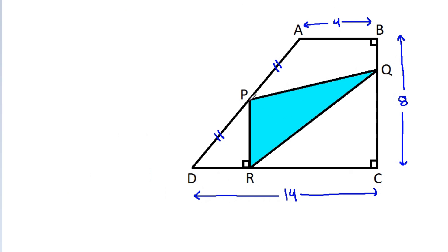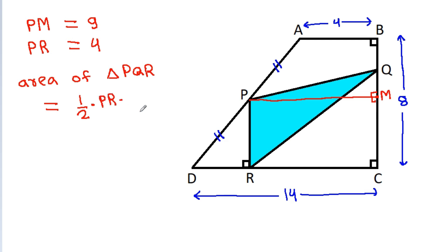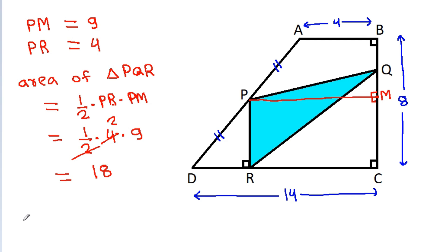Now, if we draw a perpendicular from P on BC, this point is M. We have PM equal to 9 and PR equal to 4. So, area of triangle PQR equals one-half times base PR times height PM, which is one-half times 4 times 9, equals 18. So the blue area is equal to 18.